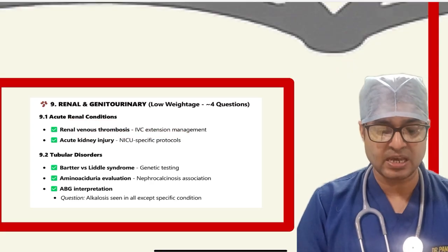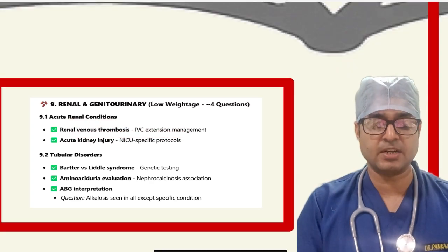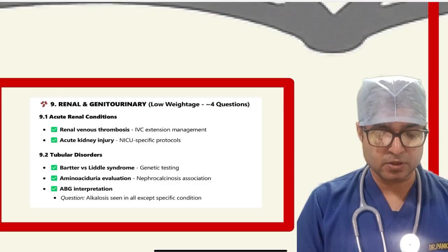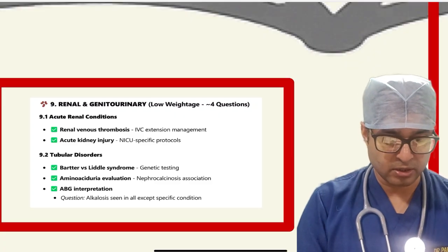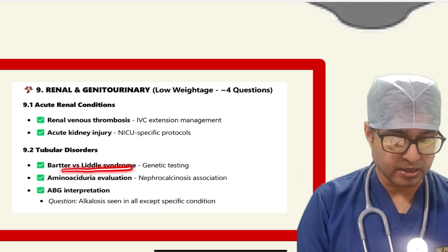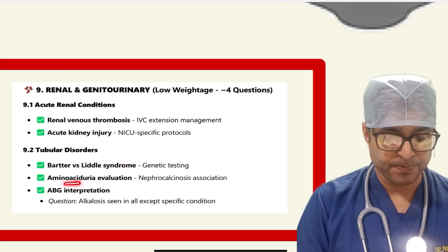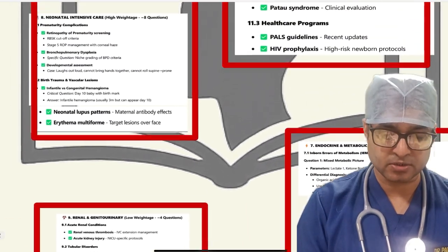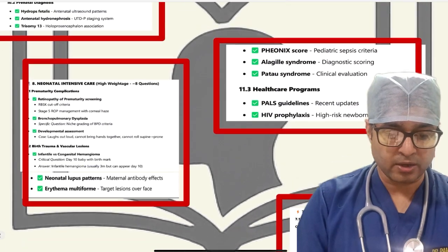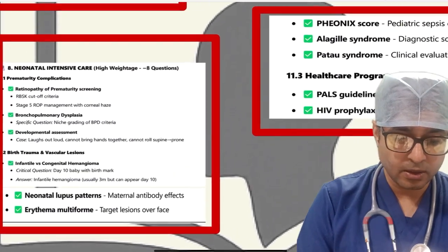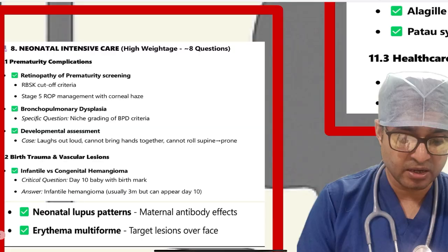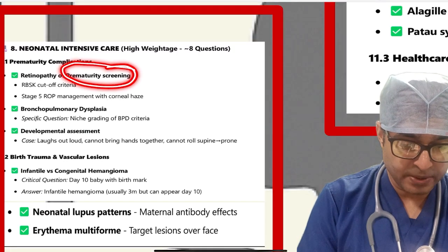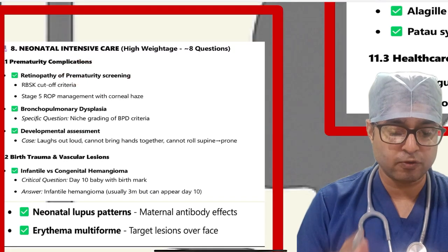The renal system generally had a few questions. Acute renal conditions like renal vein thrombosis with IVC extension management were asked. Acute kidney injury with issue-specific protocols and tubular disorders like Bartter and Liddle syndrome, amino acid and urea evaluation, and ABG interpretation were also covered.